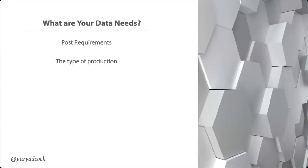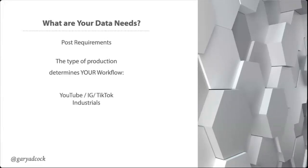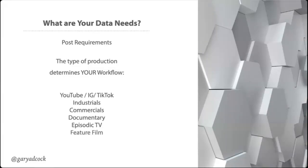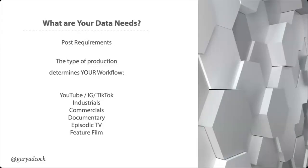Remember the post requirements. The type of production matters: documentaries, commercials — commercials shoot far less material than documentaries do. Advertising work tends to be much more concise, particularly tabletop advertising. But if you're shooting a documentary, you're just letting the cameras roll. And determine your workflow: whether you're doing YouTube, Instagram, TikTok, industrials, commercials, documentary, or episodic television — all these different kinds of production have different requirements and different needs. Always think about what that means for your specific production.